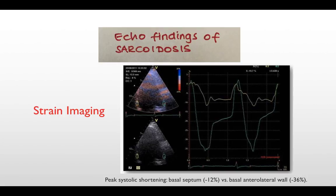If we utilize more advanced echo modalities like strain imaging, we can notice there is reduced peak systolic shortening at the area involved by the sarcoid process. For example, in this patient who had thinning of the basal part of the inferoseptum, if we compare the peak systolic shortening of the basal inferoseptum to the lateral wall of the left ventricle, there is clearly a marked reduction in the peak systolic shortening of the basal septum compared to the basal anterolateral wall.